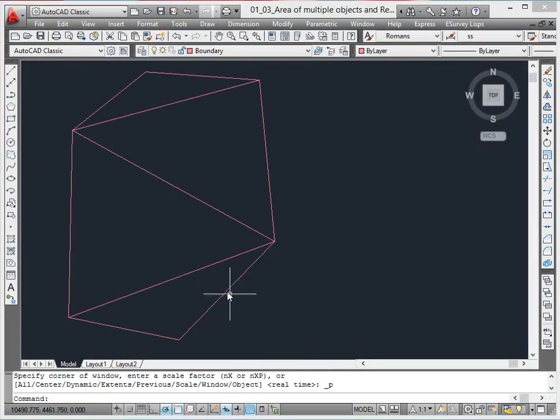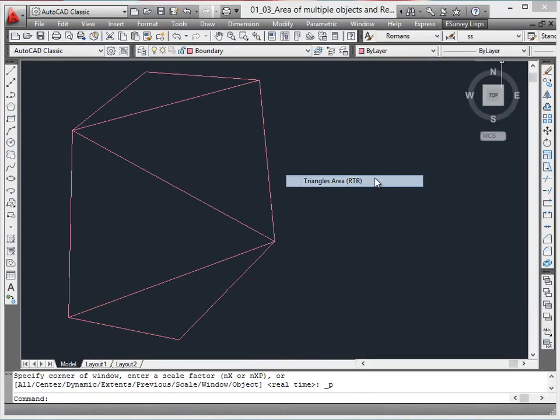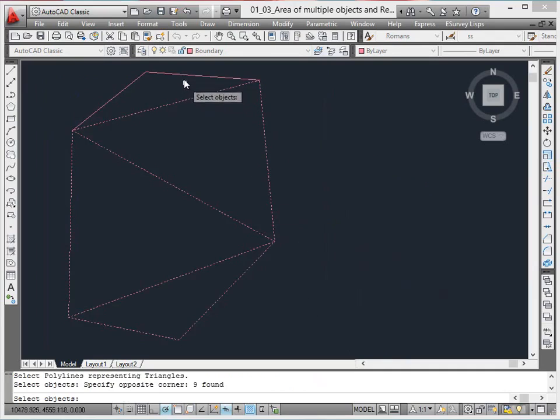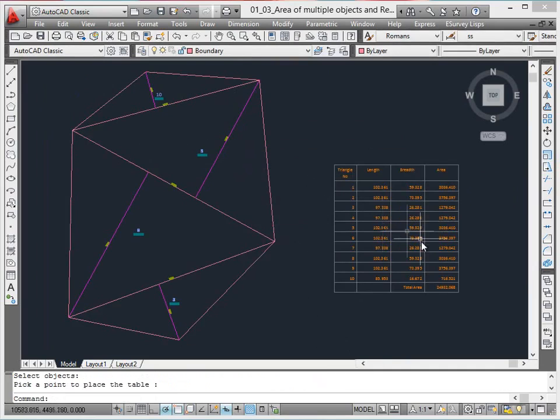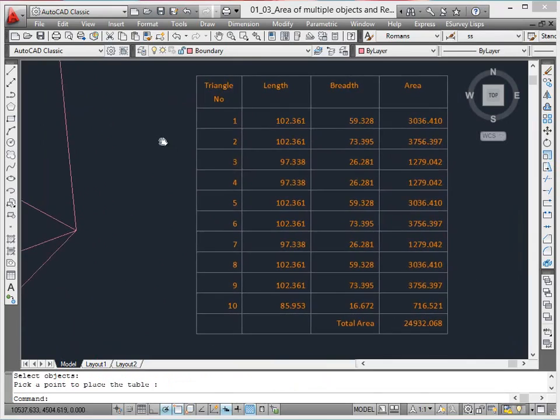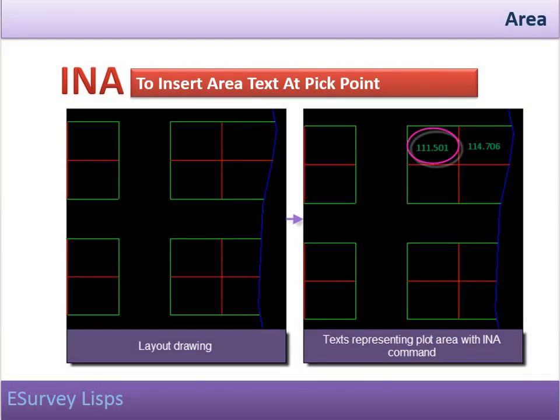The RTR command will give a detailed table of calculation for all the triangles selected by finding out the base and the height of the triangle, and using half into base into height formula. This command gives each triangle a unique number, then marks the length of each side of the triangle on the drawing with the area displayed at the center of the triangle, then prompts you to specify a location for placing the calculation details.